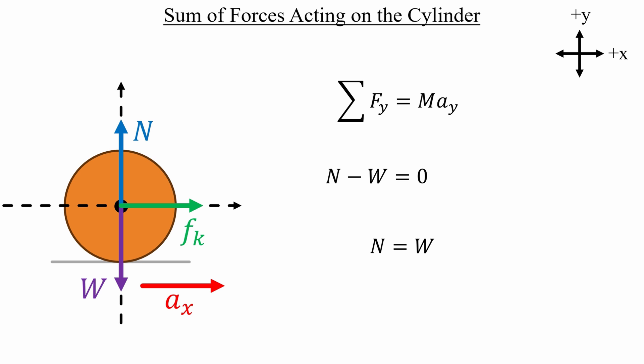Let's go back to our equation from the x direction. I'll switch out the normal force for the weight, and then plug in its definition. We get the mass of the cylinder on both sides, which can be cancelled out. And mu sub k times g is the linear acceleration that we're looking for.